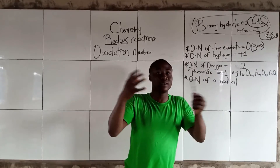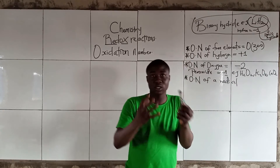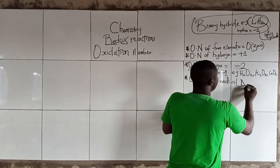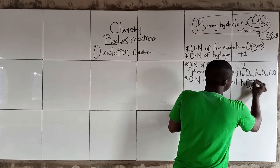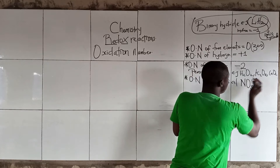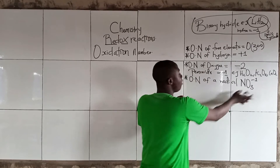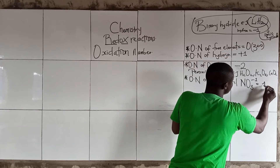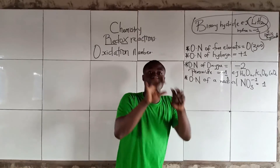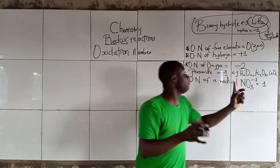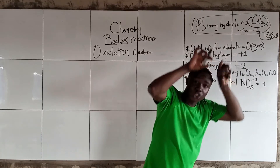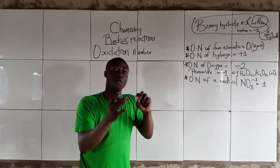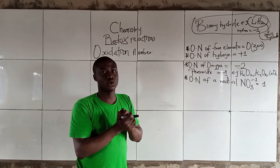The oxidation number of a radical refers to the charge on the radical. A radical is a group of atoms which behaves as a single charge unit. For example, NO₃⁻ has a charge of minus one, so the oxidation number of this nitrate radical is minus one. The oxidation number of a radical is simply the charge on the radical. With this concept, we can solve questions on oxidation number.